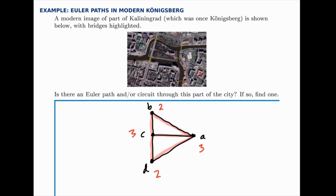So yes, on the modern-day map there is an Euler path. Not an Euler circuit, but yes there's an Euler path. And we found one example of one, although you could find others certainly.